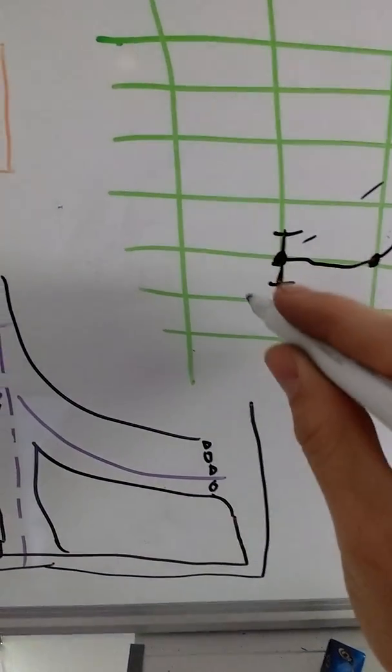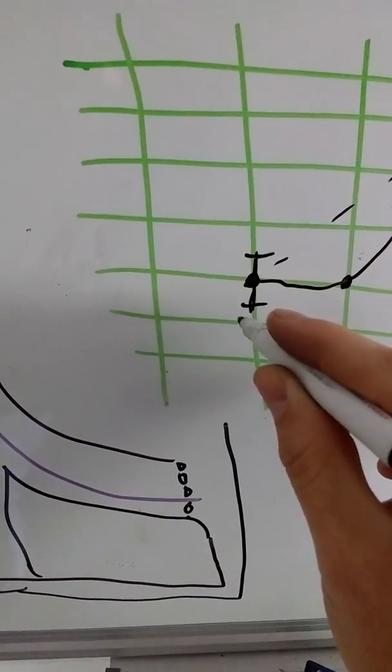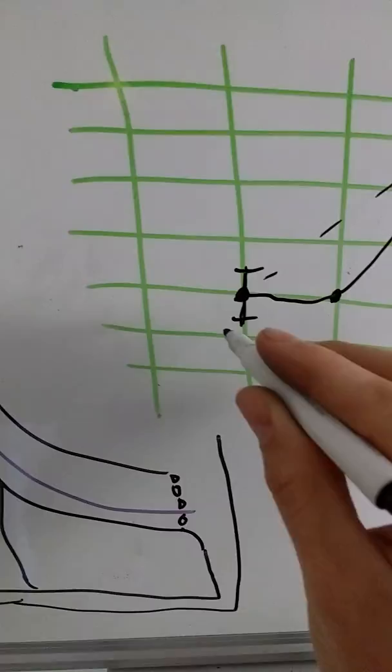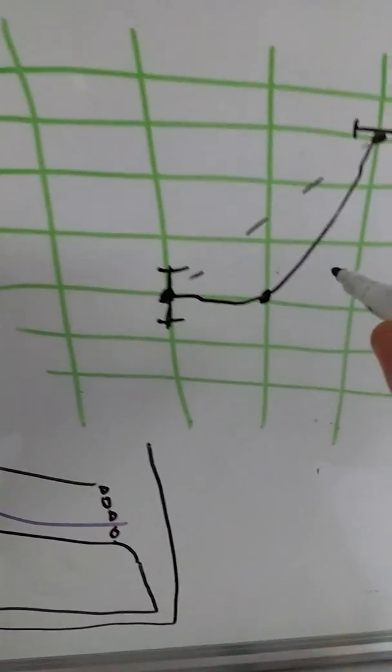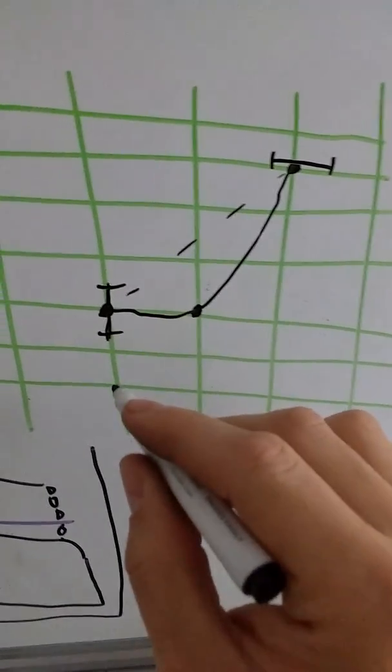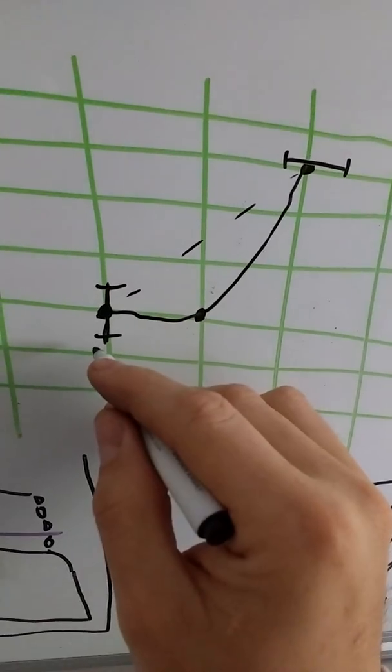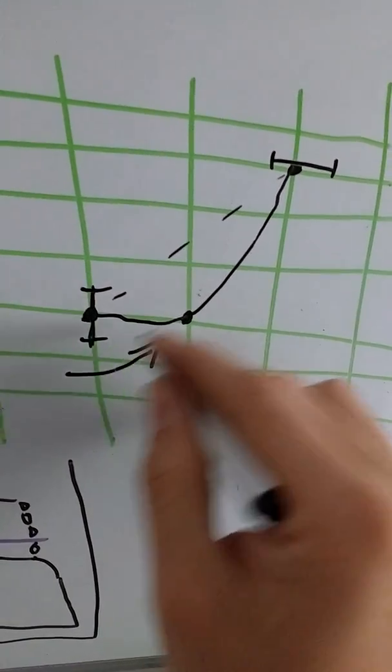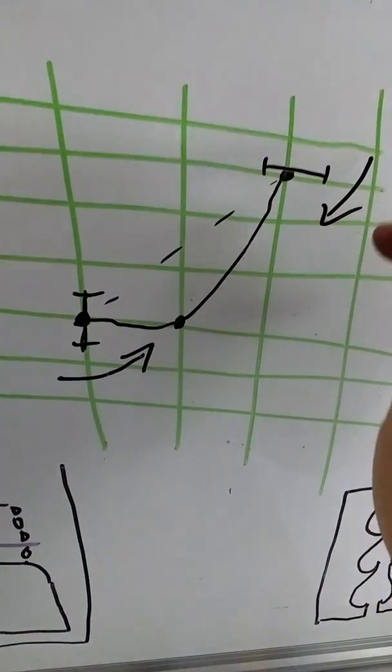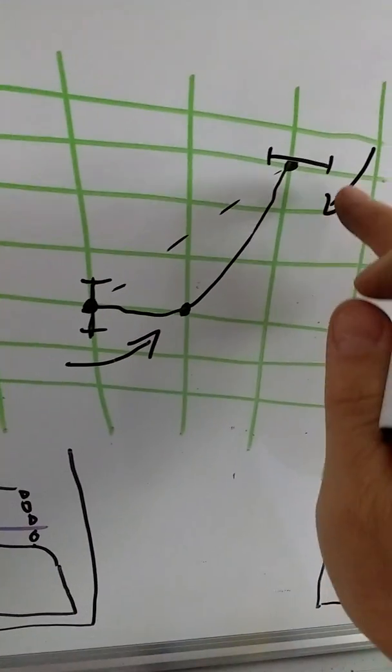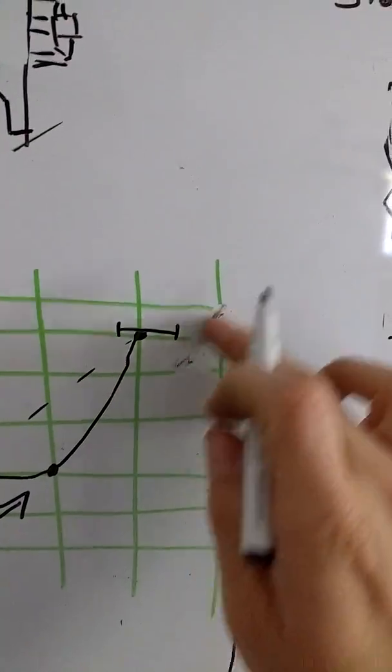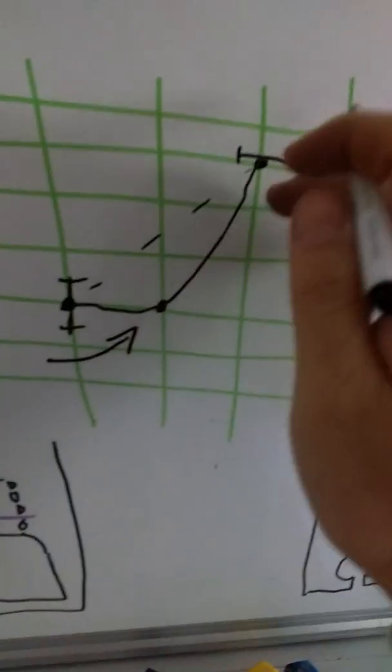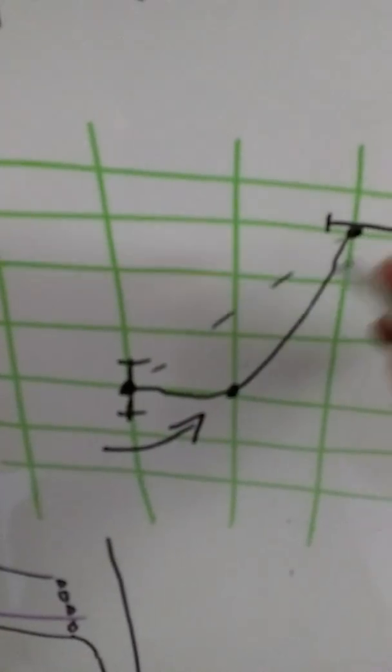So then you pick out the direction that you want the air flow or the water flow or whatever you want flowing through your Tesla valve. So you then pick this way or this way. For the sake of my design, I need it to flow in this direction.